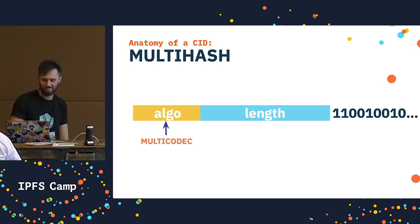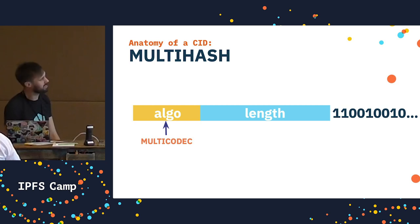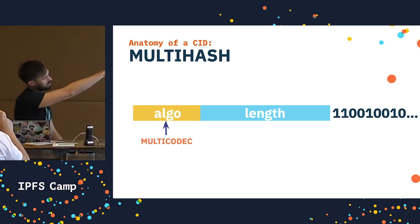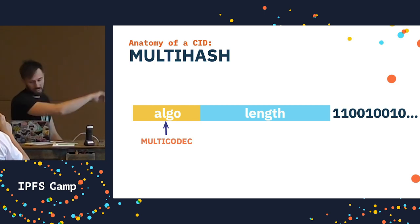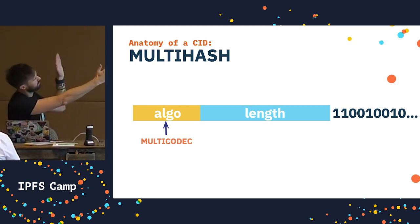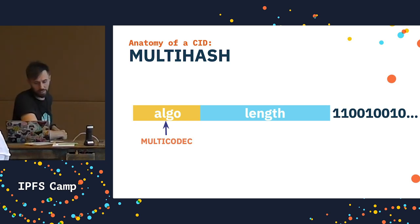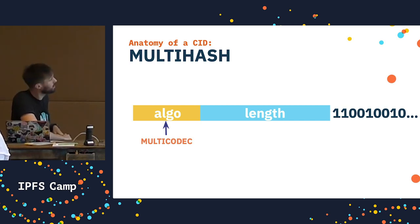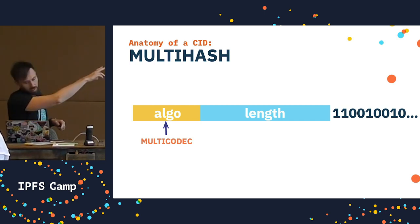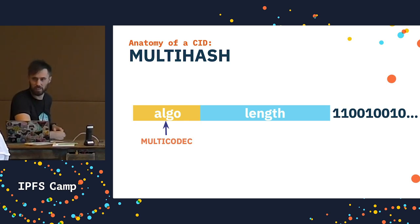Multihash will solve all your problems. Multihash is the hash itself at the end, but it's also a prefix. That prefix is one number — the algorithm — which identifies the hash algorithm used to generate the hash, and another number which is the hash length.